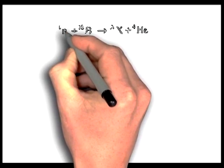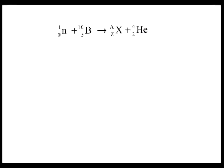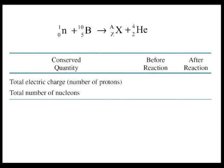For instance, consider the following induced nuclear reaction. A neutron strikes a boron-10 nucleus. As a result, an unknown nucleus X with atomic number Z and nucleon number A is produced, along with an alpha particle. We can use the conservation of charge and nucleon number to identify the unknown nucleus produced.